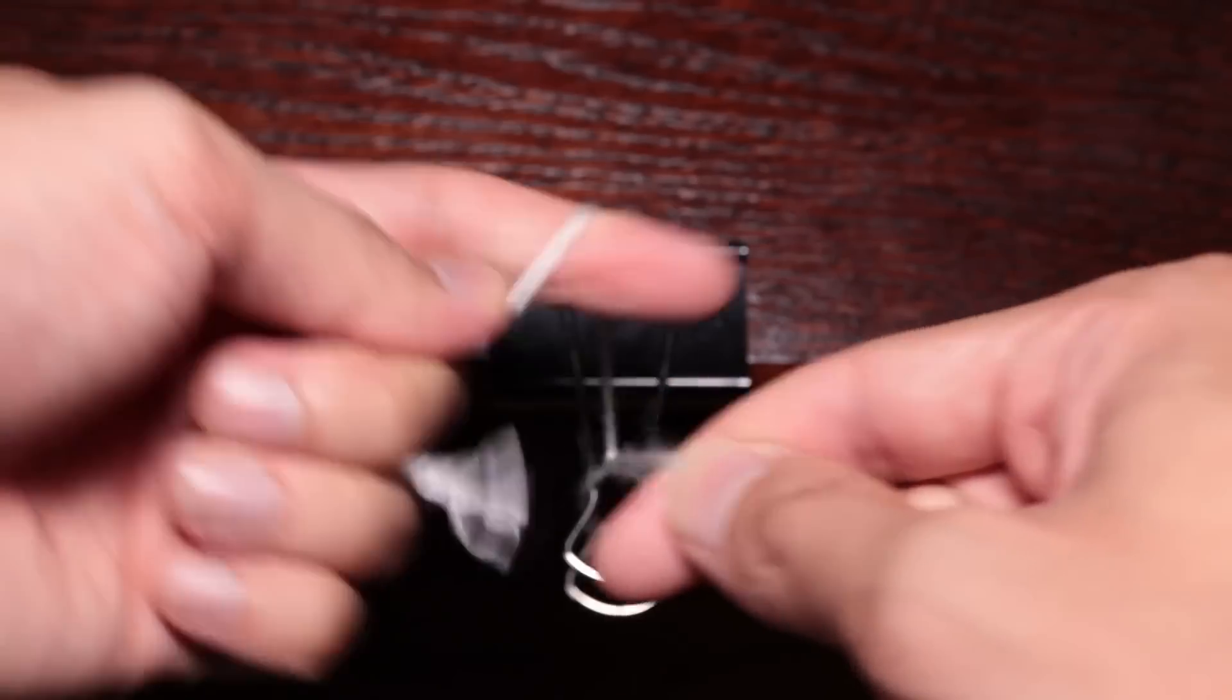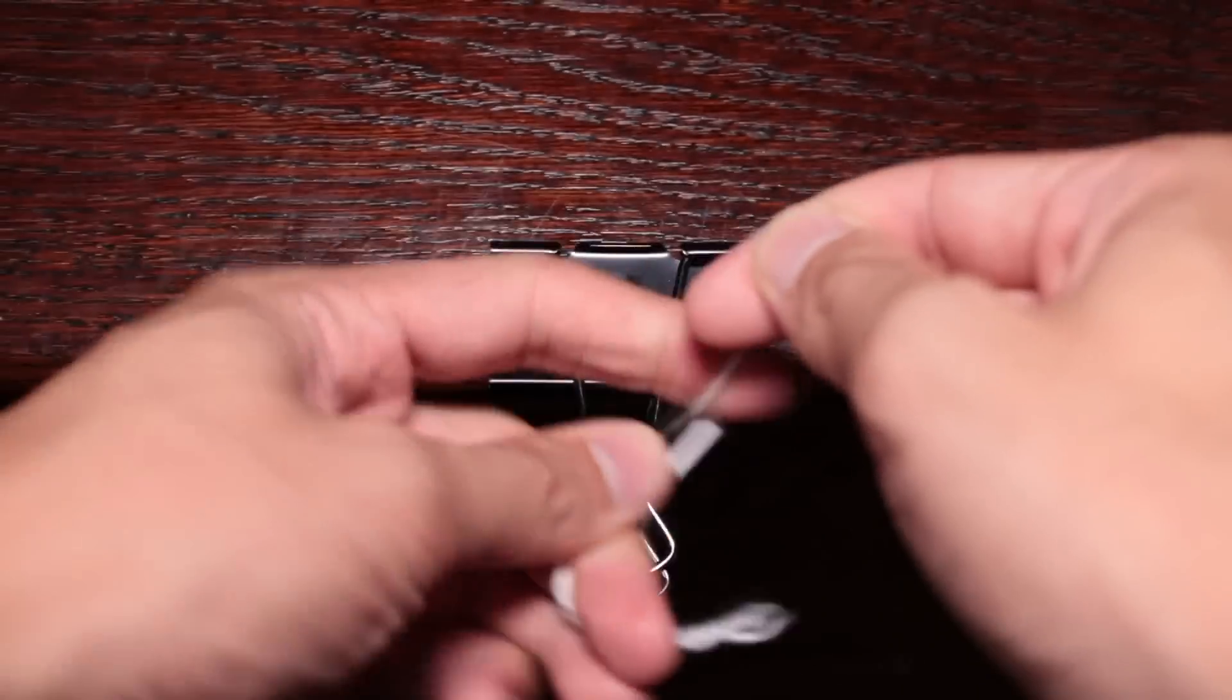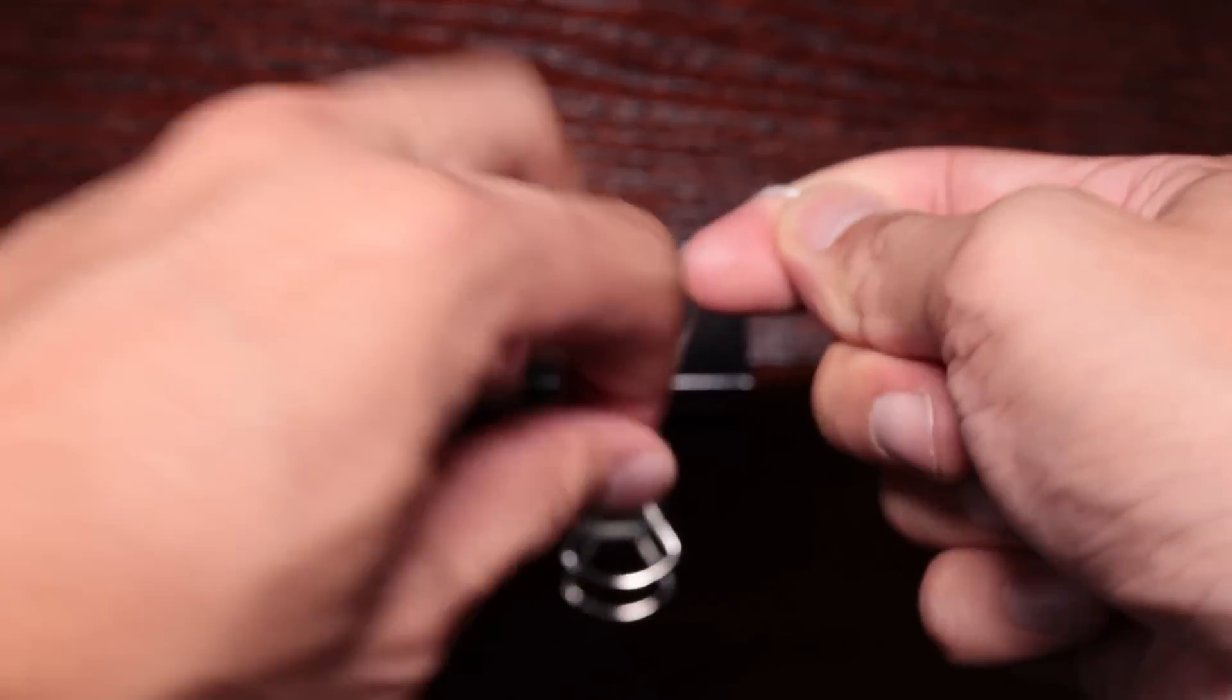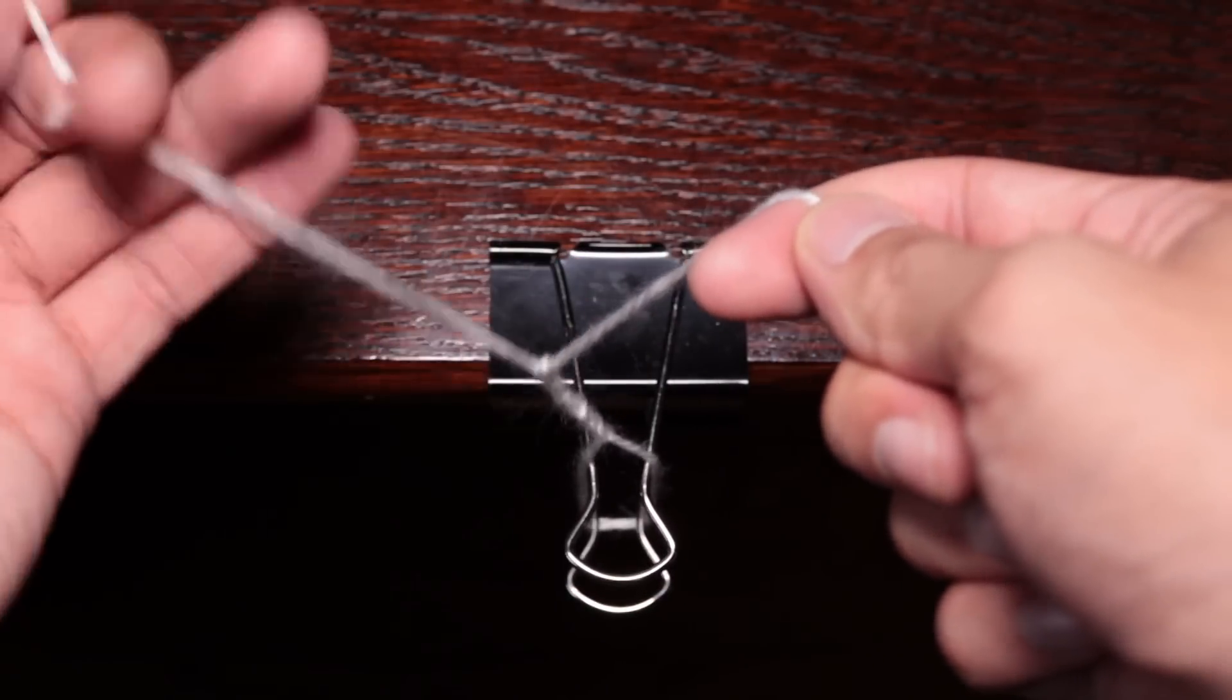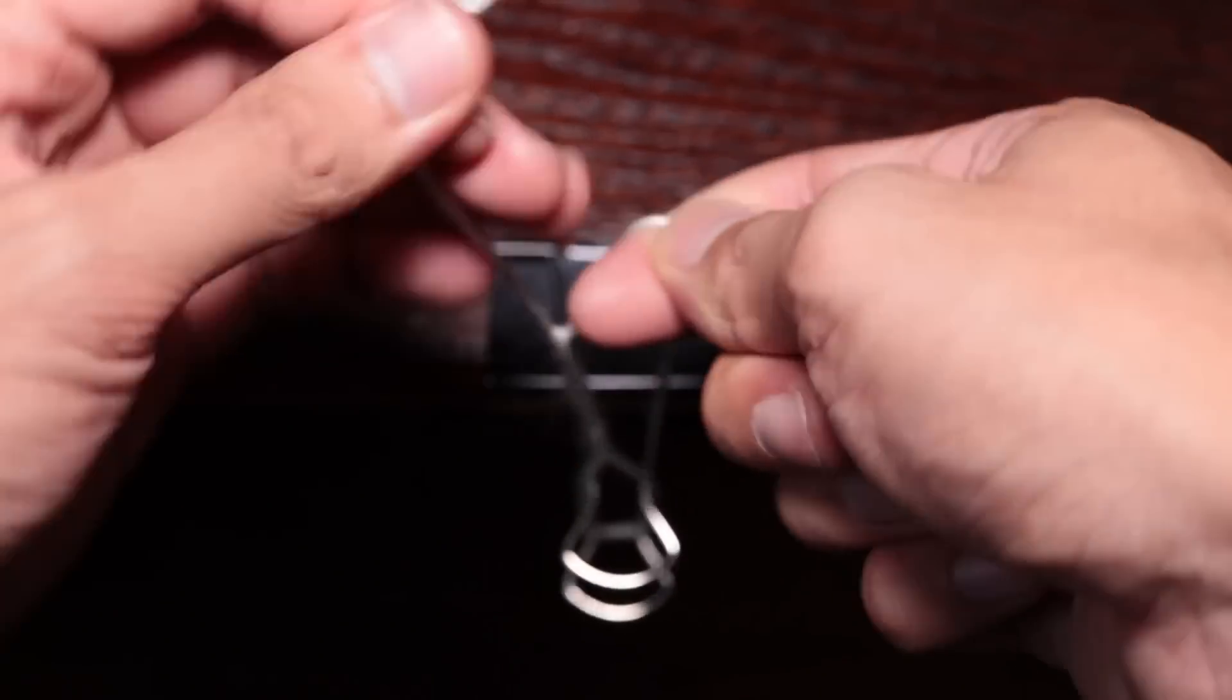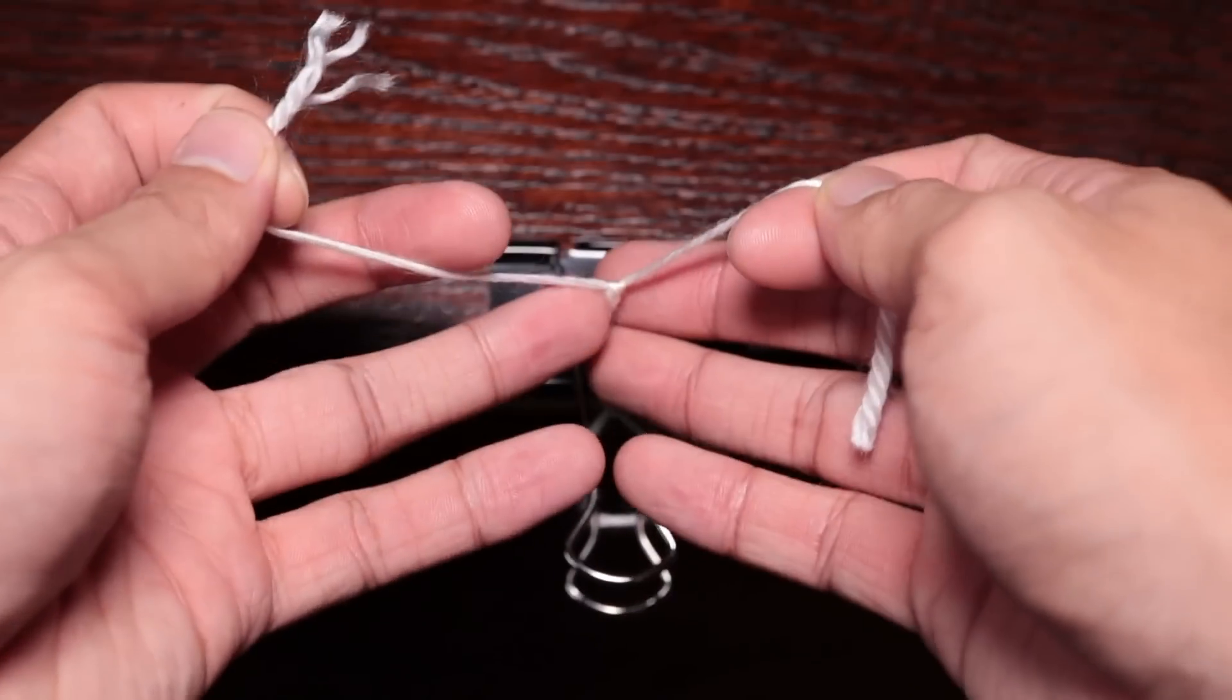And there you have it, the one-handed tie. Don't hesitate to go back and watch this video. Pause at any time to see the positioning. Make sure you're doing everything right because it could be confusing at first. This knot in general is learned faster than the two-handed knot which I'll be showing in the next video.